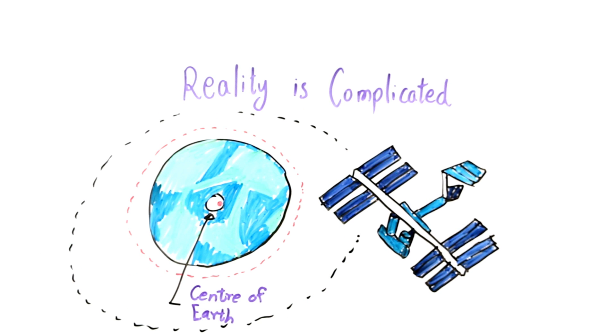But that center of gravity is so absurdly close to the center of Earth that the planet's motion around the point is impossible to spot, and the space station follows a nearly perfect circle around the whole planet.